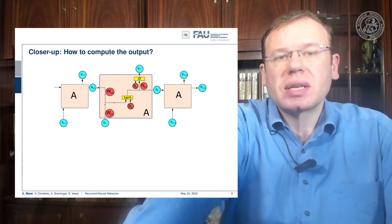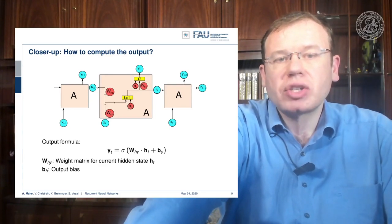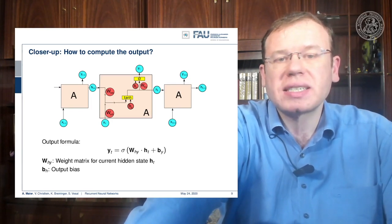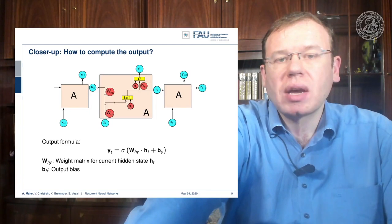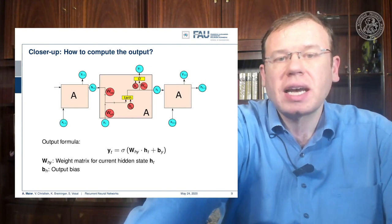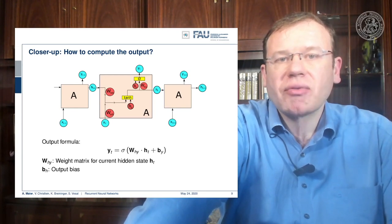Okay, so how can we compute the output? Well, we have produced a new hidden state, which means that we now just have another transition matrix that produces a preliminary output from the hidden state. So we have this new WHY that is taking HT and some bias and feeds it to the sigmoid function to produce the final output.